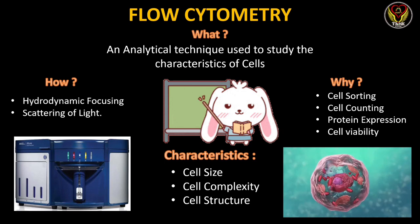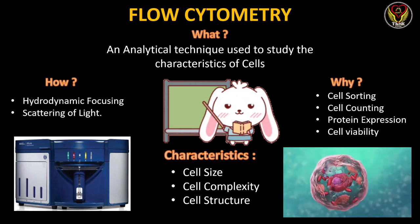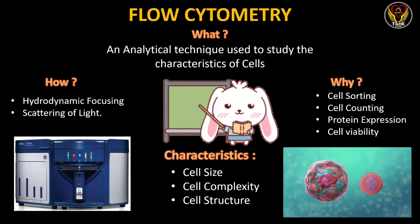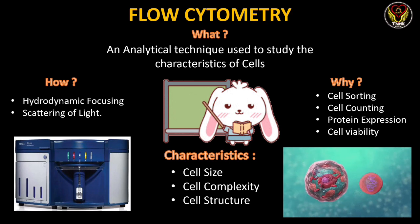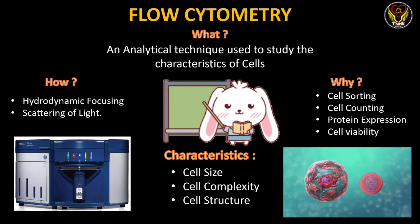Now let's see why we use this technique. It can be used for cell sorting — that is, cell separation. If we take a blood sample, there will be many types of cells, namely RBC, WBC, platelets, etc., which can be sorted and separated using flow cytometry. Second is cell counting — we can estimate the number of cells present in our sample. Third is protein expression — we can check whether a particular protein is expressed in our cell or not. Next is cell viability — based on signals from the cell and other enzymatic methods, we can detect whether the cell is viable or dead.